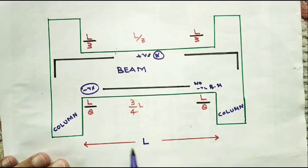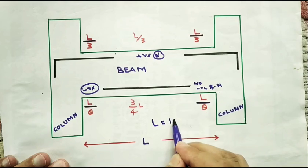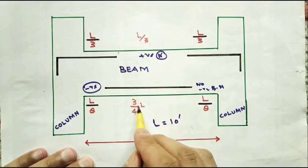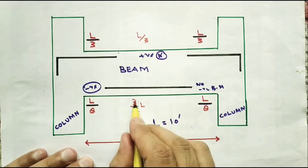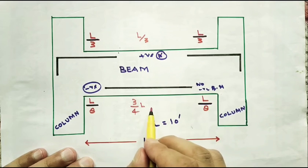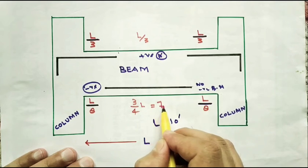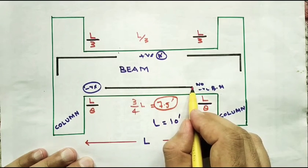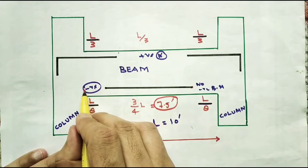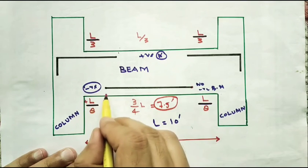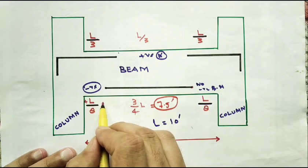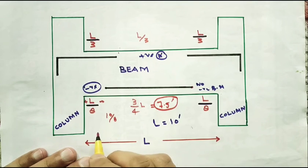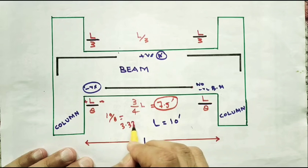Suppose my beam length is L — we call it 10 feet. Now in the lower section we have to give the steel. It will be 3 by 4 into 10, so it will be 7.5 feet. So we have to give the steel. And how much length we have to cut? It means we have to give the steel into the column, so it will be L by 8, which is 10 by 8, which will be 1.25 feet.